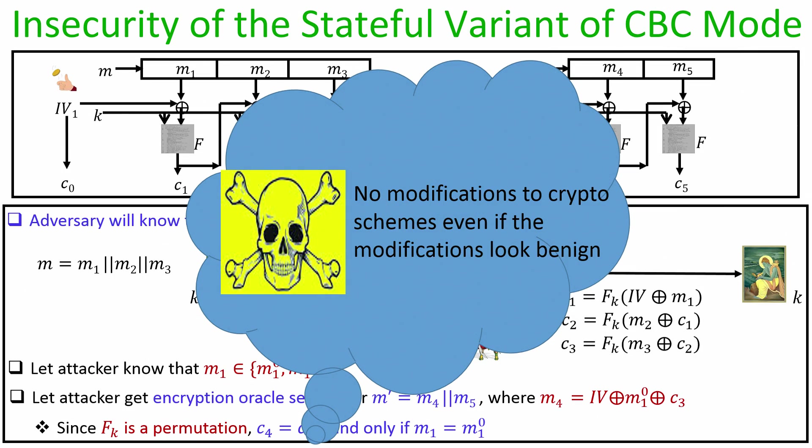To summarize: we have seen two modes of operations of pseudo random permutations — the ECB mode and the CBC mode. ECB mode is not CPA secure and is not recommended in practice. CBC mode is CPA secure (though the proof was not shown here). The disadvantage of CBC mode is that it does not support state across multiple messages and does not support parallelism. The next lecture will cover two other modes that are CPA secure and address these drawbacks.